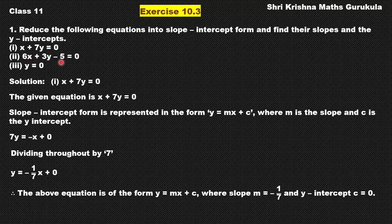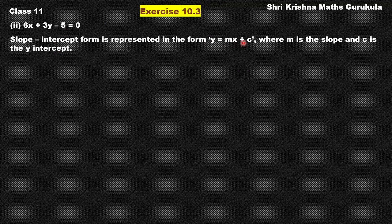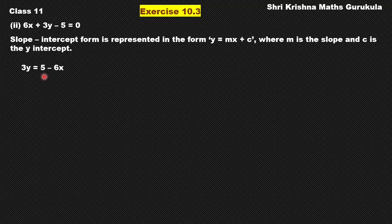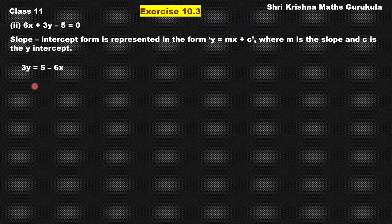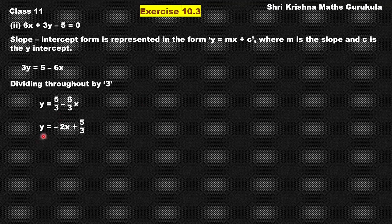We shall solve the second equation now, which is 6x plus 3y minus 5 equals 0. Again the equation is in general form ax plus by plus c equals 0. To reduce it to slope-intercept form, we retain 3y in the LHS and move 6x and minus 5 to the RHS: 3y equals 5 minus 6x. Dividing throughout by 3 gives y equals 5 by 3 minus 6 by 3 times x. Rearranging the RHS gives y equals minus 2x plus 5 by 3.